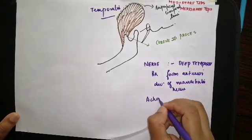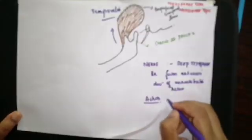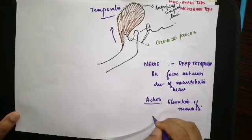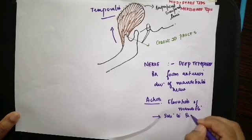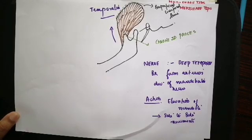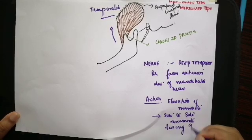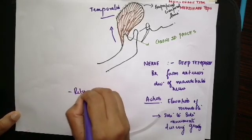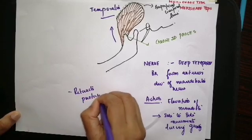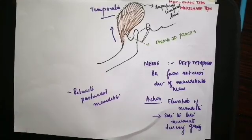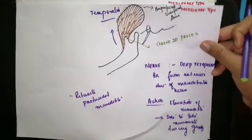The actions of the temporalis muscle are: it causes elevation of the mandible, resulting in closure of the mouth. Besides this, it also causes side-to-side movement of the jaw during grinding movements, and it also causes retraction of the protruded mandible.